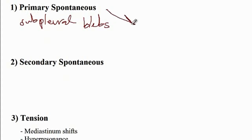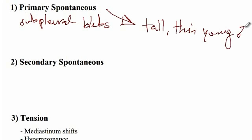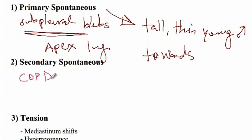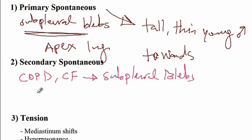Primary spontaneous pneumothorax occurs in healthy individuals — usually tall, thin, young men — who develop rupture of subpleural blebs at the apex of the lungs. Since new space opens up, the mediastinum and trachea shift towards the lesion site. Secondary spontaneous pneumothorax involves complications of underlying diseases like COPD or cystic fibrosis, which increase the risk of subpleural bleb rupture. In tuberculosis patients, rupture of a tuberculosis cavity can also cause pneumothorax.